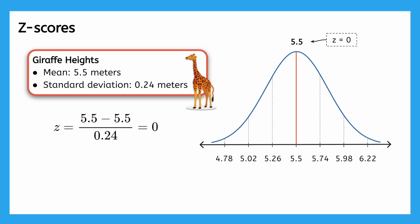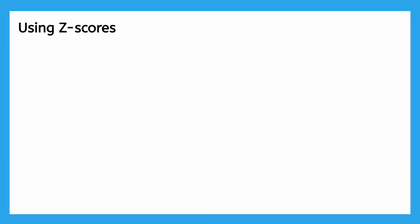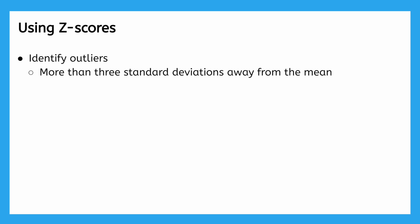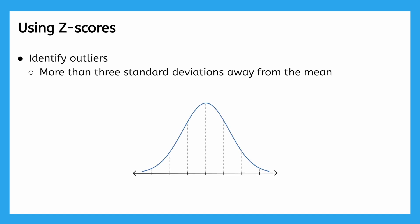Now that we know how to calculate z-scores, what else can they tell us besides where a value falls relative to the mean? Similar to the IQR method for identifying outliers, we can use z-scores to help us identify unusual values, or outliers. While there is no single rule for determining an outlier using z-scores, values that are more than 3 standard deviations away from the mean are often considered extreme. Why 3 standard deviations? Well, remember, when data is normally or approximately normally distributed, we can use the empirical rule to approximate probabilities.